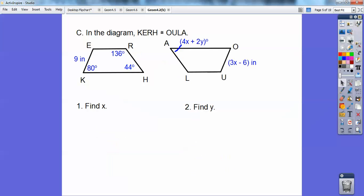I have some more examples to explain that. So in this diagram, KERH is congruent to OULA. That means K corresponds with O, E is equal to U, R is equal to L, and H is equal to A.